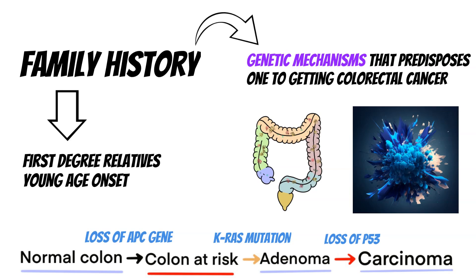There is a molecular pathway showing how this develops: from a normal colon, to a colon at risk, to an adenoma, and then a carcinoma. Along this pathway we can see the genetic security systems that are breached — for example the APC gene becomes damaged and unable to do its job properly — progressing us through each step. This is one of the key molecular pathways in the development of colorectal carcinoma.